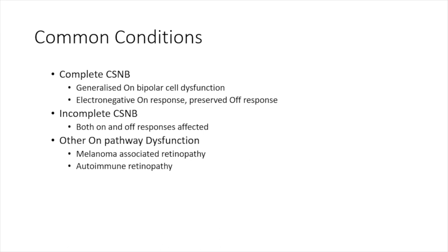In complete CSNB — a problem with the on-bipolar cells — only the on-response will be affected, giving an electronegative on-response while the off-response is preserved. In incomplete CSNB, both on- and off-bipolar cells are affected, so both responses are abnormal. Melanoma-associated retinopathy and autoimmune retinopathy will affect only the on-pathway specifically.